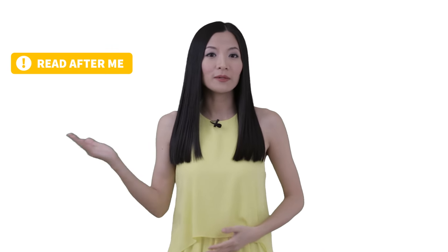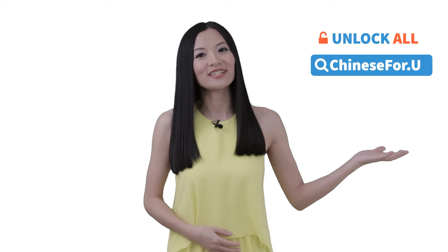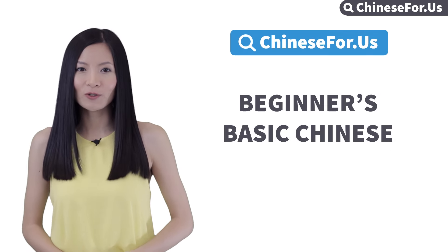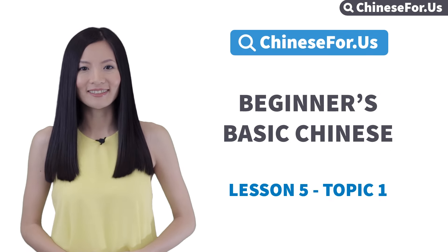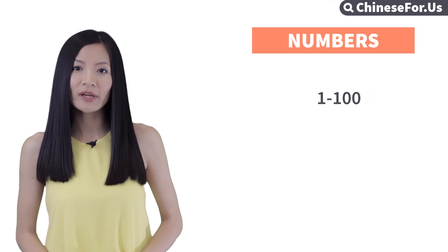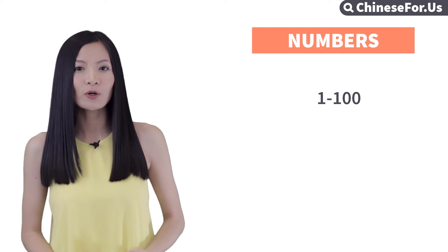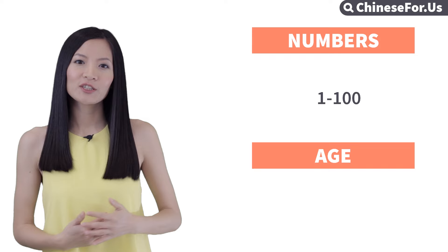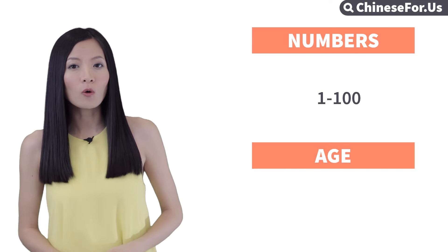我二十岁. Please read along with the video when you see blue characters, and you can have full access to all of our lessons with the Chinese For Us Premium Membership. Hi, 你好, welcome to Chinese For Us Beginners Basic Chinese Course Lesson 5. I'm Lily. Last time we learned how to say the numbers in Chinese from 1 to 100. So today we can learn how to ask and answer questions about one's age by using these numbers. Let's start by saying your own age first.